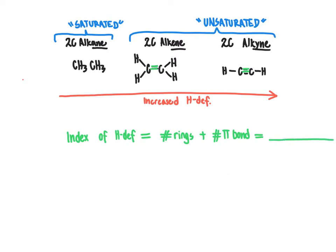The formula to keep in mind for the index of hydrogen deficiency is: take two times the number of carbon atoms, plus two, minus the number of hydrogen atoms, minus the number of halogens (X), plus the number of nitrogen atoms, then divide all of that by two. Here X equals a halogen — so chlorine, fluorine, iodine, bromine, and so on.